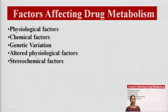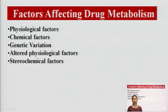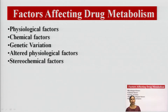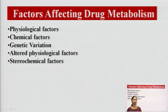So far we have studied phase 1 metabolism and phase 2 metabolism. Drugs undergo metabolism and are converted into hydrophilic molecules, which can be eliminated by urine or through bile from the body. The factors that affect these metabolic processes include physicochemical factors, physiological factors, chemical factors, genetic variations, altered physiological factors, environmental factors, and stereochemical factors.